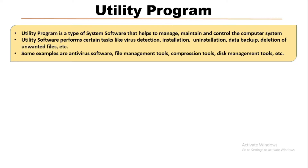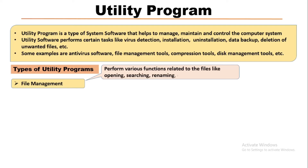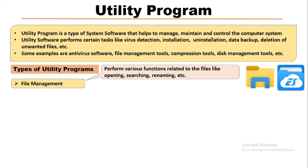Now we will look at the different types of utility programs. There are several types and here I will discuss only some of them. The first one is file management. With the help of file management programs, users can perform various functions related to files saved in the system, such as searching, renaming, opening, and deleting. The most useful file management tools are File Explorer and ES File Explorer for smartphones.